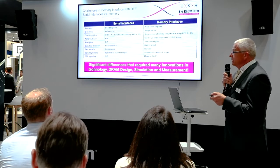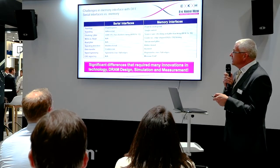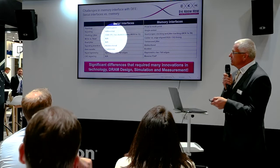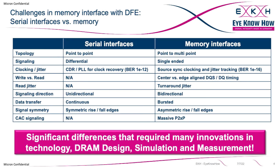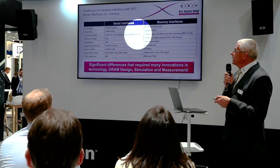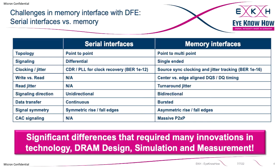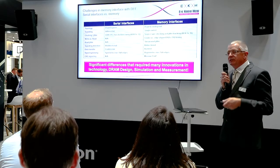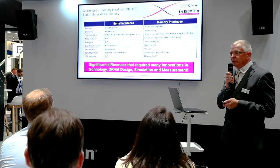Another difference we have never seen on serial interfaces is that we need to take care about read and write, and also the read jitter. For serial interfaces we have a TX transmit line and RX, and all transmit data continuously, while on memory interfaces we have different timing — DQS to DQ for read versus write, edge versus center aligned. Also the turnaround jitter, because the DRAM receives a clock signal and all the data sent back relies on the input quality of that input clock.